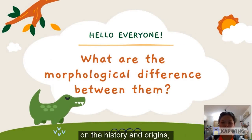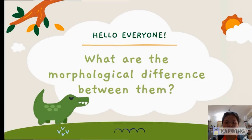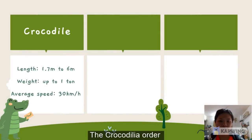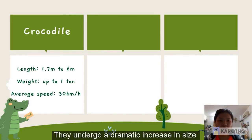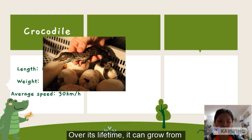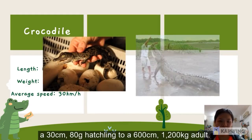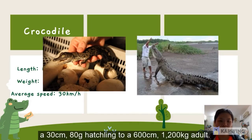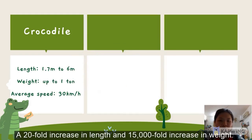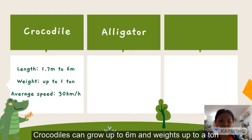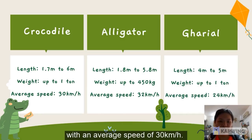After having a better understanding of the history and origins, what are the morphology differences between them? The Crocodile Order can be differentiated by their length, weight and average speed. They undergo a dramatic increase in size from hatchling to adult — growing from a 30cm, 80g hatchling to a 600cm, 1,200kg adult: a 24% increase in length and a 15,000-fold increase in weight. Crocodiles can grow up to 6m, weigh up to a ton, with an average speed of 30km per hour.